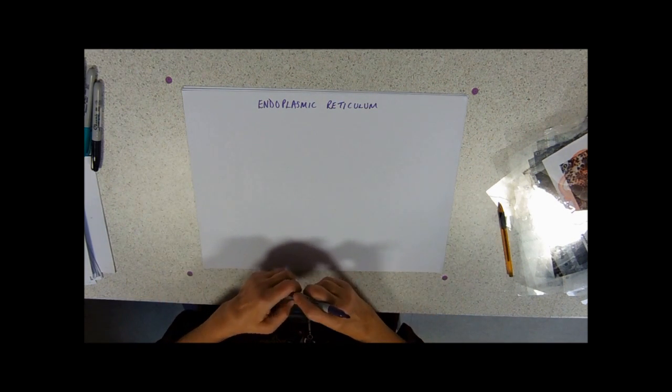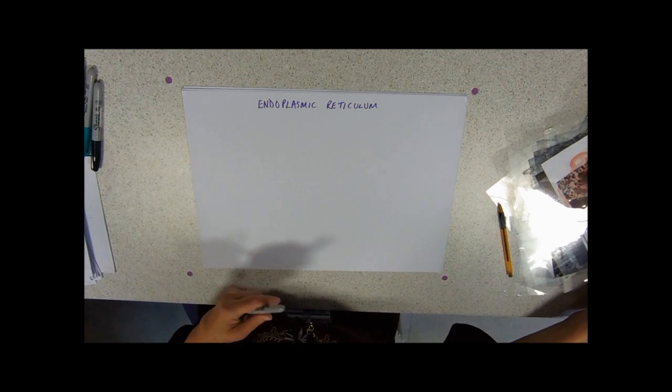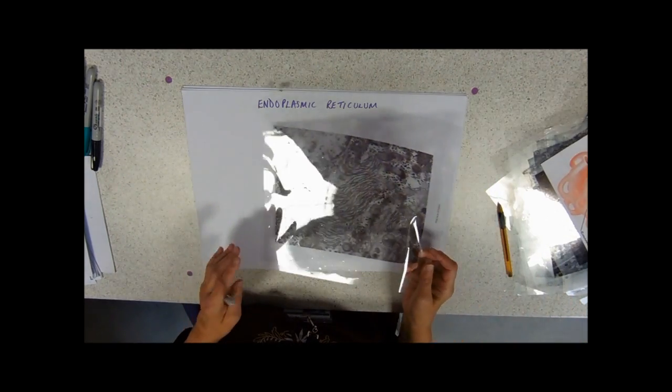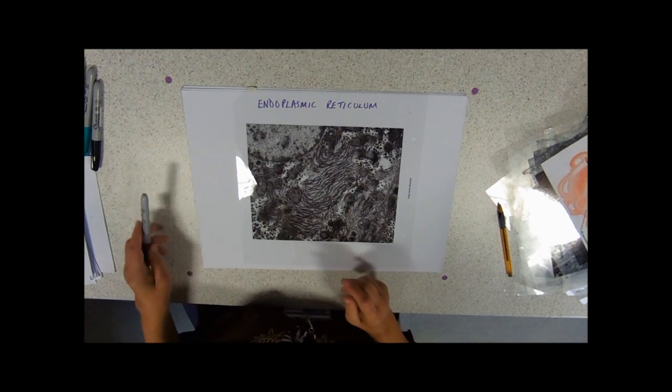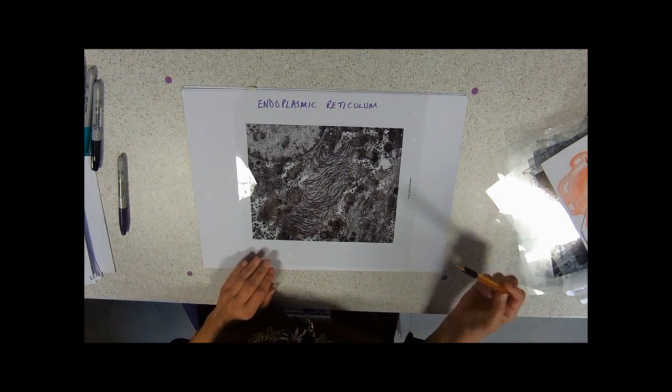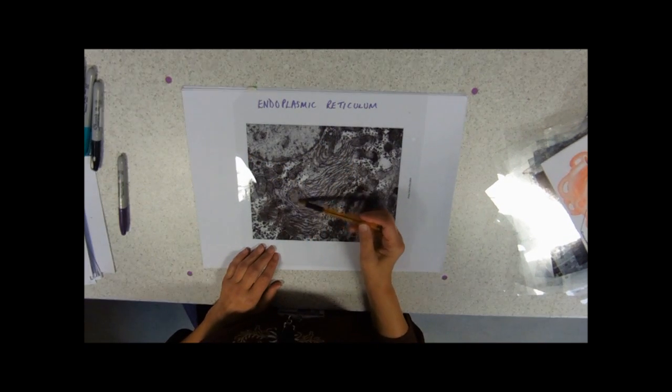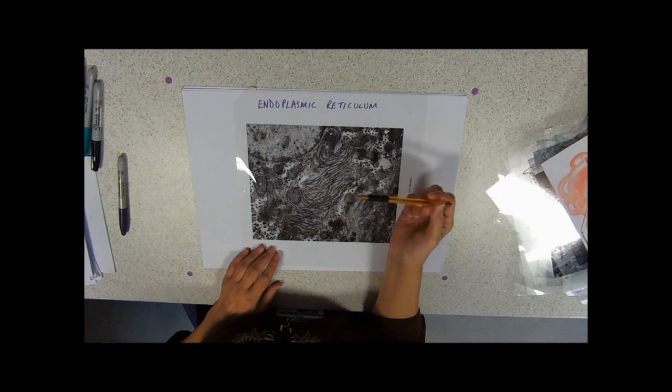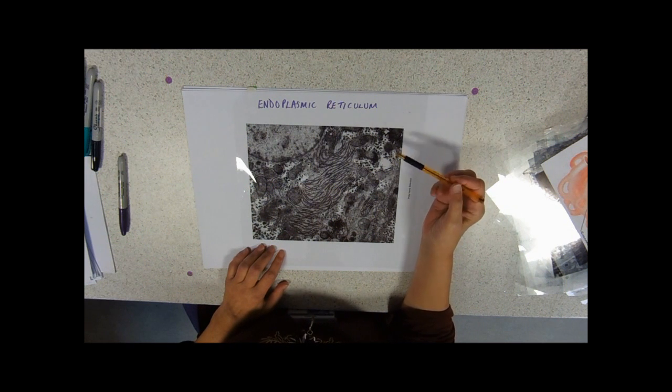So, endoplasmic reticulum is often referred to as a single organelle, which we'll see in a minute. But when you look at an electron micrograph of a cell, so this is a cell, we can see the nucleus up in this top corner. You can see all these little oval and round mitochondria. Now, when we did the mitochondria, when you looked at the mitochondria video, it says mitochondria are a sausage shape.